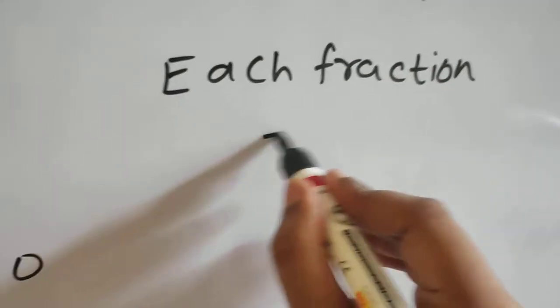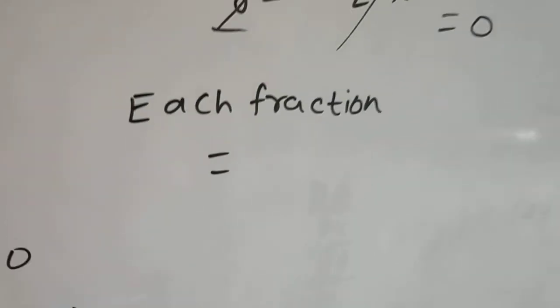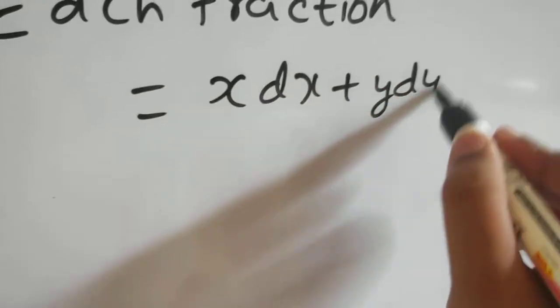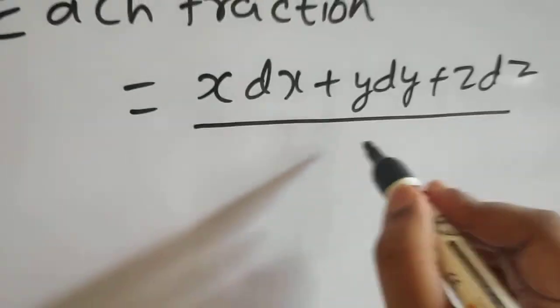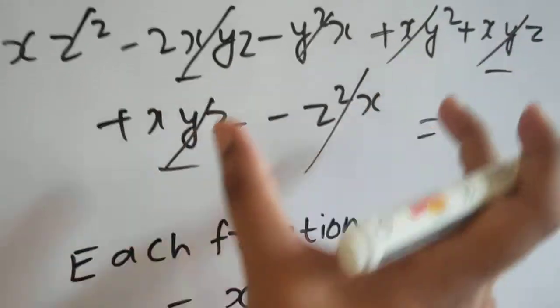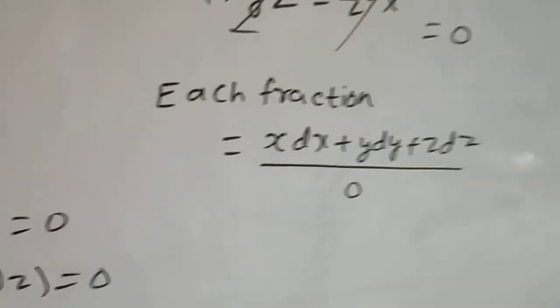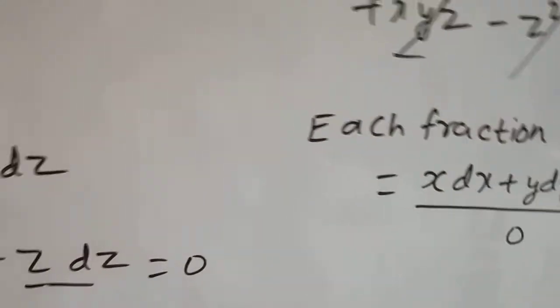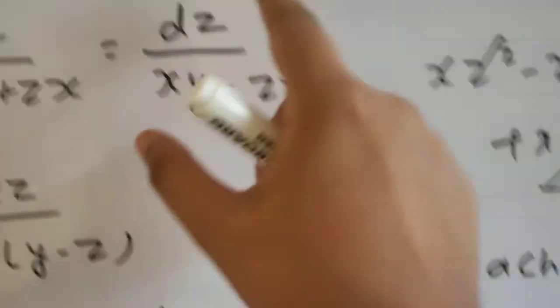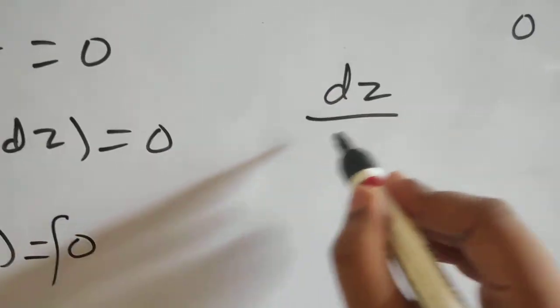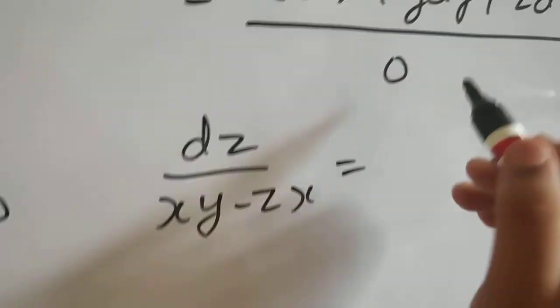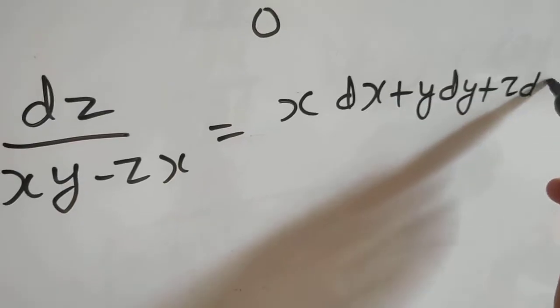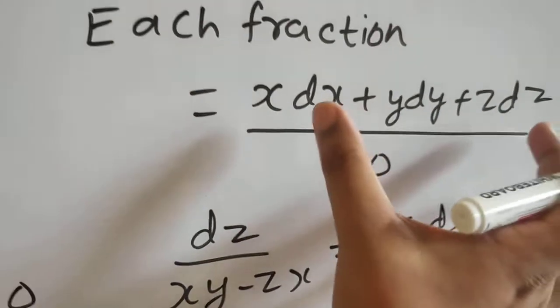So, I can say that each fraction, each of the 3 fraction which we are having is equal to what was my multiply? It was x, y, z. So, x, d, x plus y, d, y plus z, d, z divided by 0. Because if you are going to write the same thing in denominator and this is equal to 0. So, 0. So, each fraction is equal to this. Now, it does not matter what you take. Either you take this each fraction. So, I am taking this. Any fraction you take it does not matter. Because it is anyway going to be multiplied by 0. So, x, d, x plus y, d, y plus z, d, z.